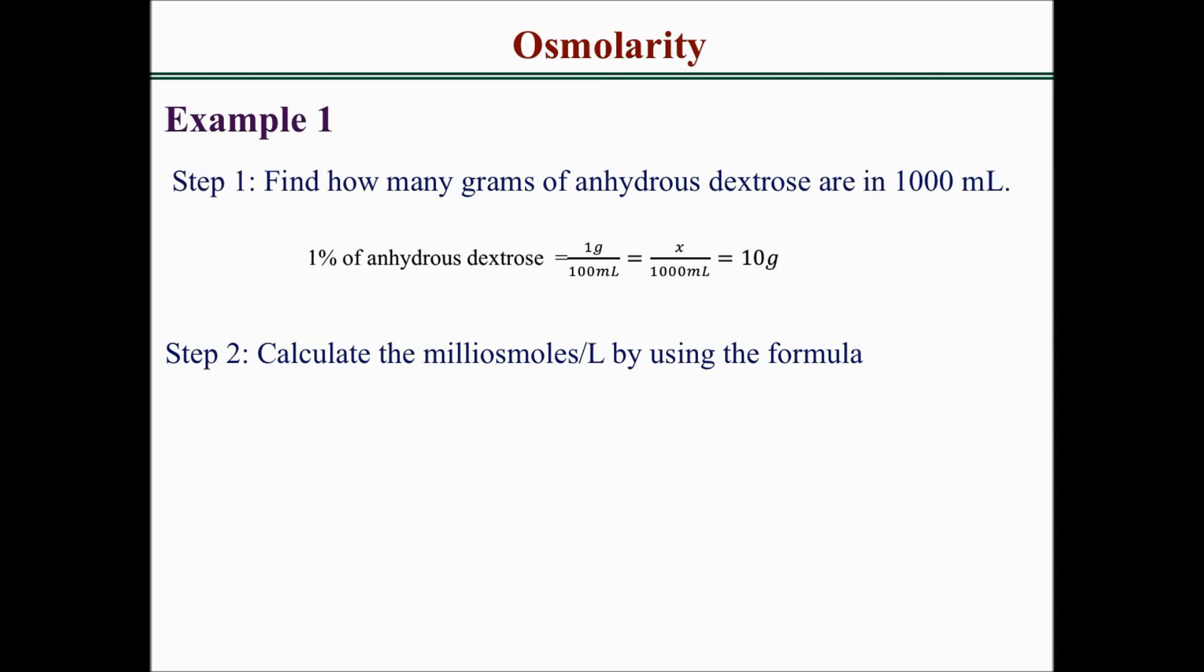Step 2 is to calculate what the question is actually asking us. The question asks us to calculate the milliosmoles per liter. We have to use the formula. The formula for milliosmoles per liter is mass in grams over molecular weight in grams per mole times number of particles times 1000.